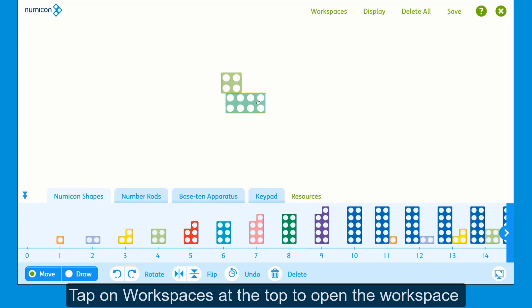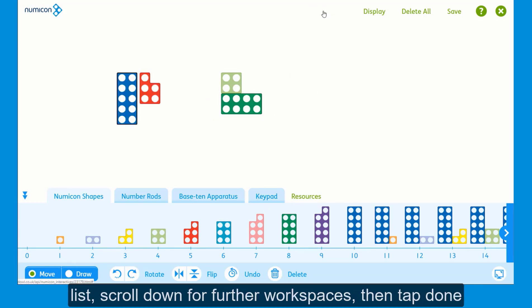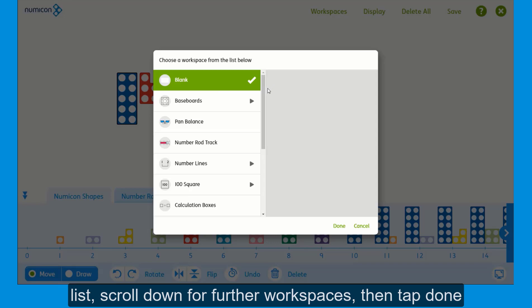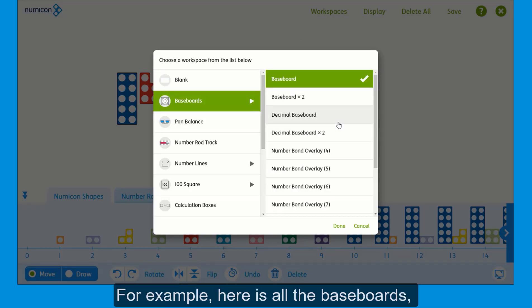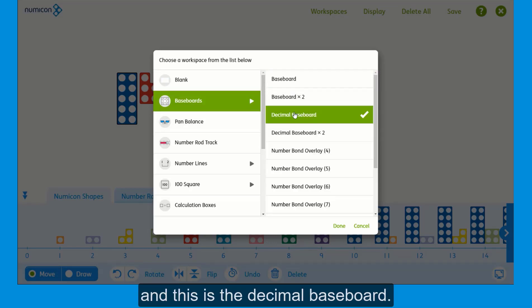Tap on workspaces at the top to open the workspace list. Scroll down for further workspaces, then tap Done to open that workspace. For example, here are all the baseboards and this is the decimal baseboard.